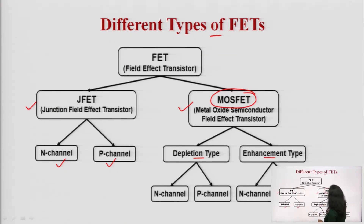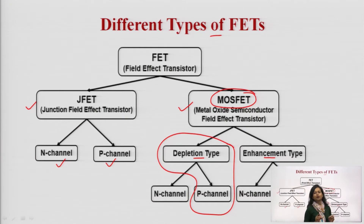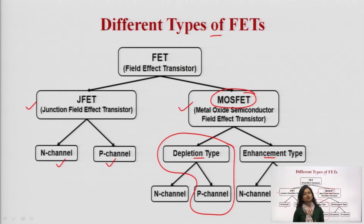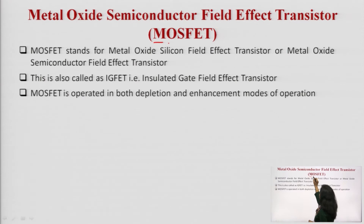Depletion type and enhancement type MOSFETs are again of two types: N-Channel or P-Channel. In this session, I will be discussing about the P-Channel depletion type MOSFET. From the name itself it must be clear: P-Channel means the channel is made from P-type semiconductor and the basic substrate is to be taken as N-type. MOSFET — M is for metal, O is for oxide, S is for semiconductor field effect transistor.